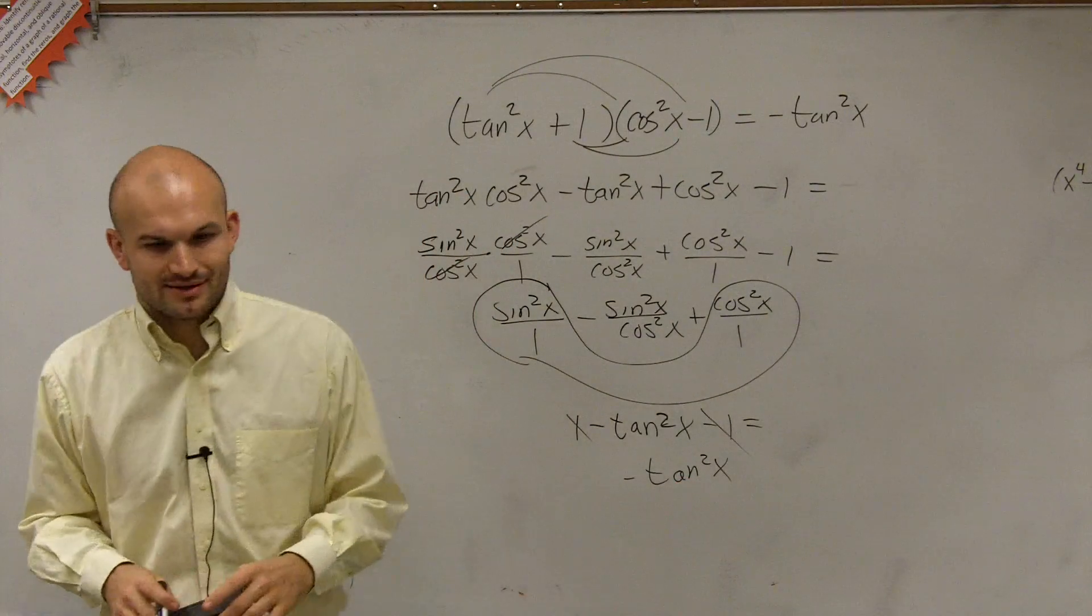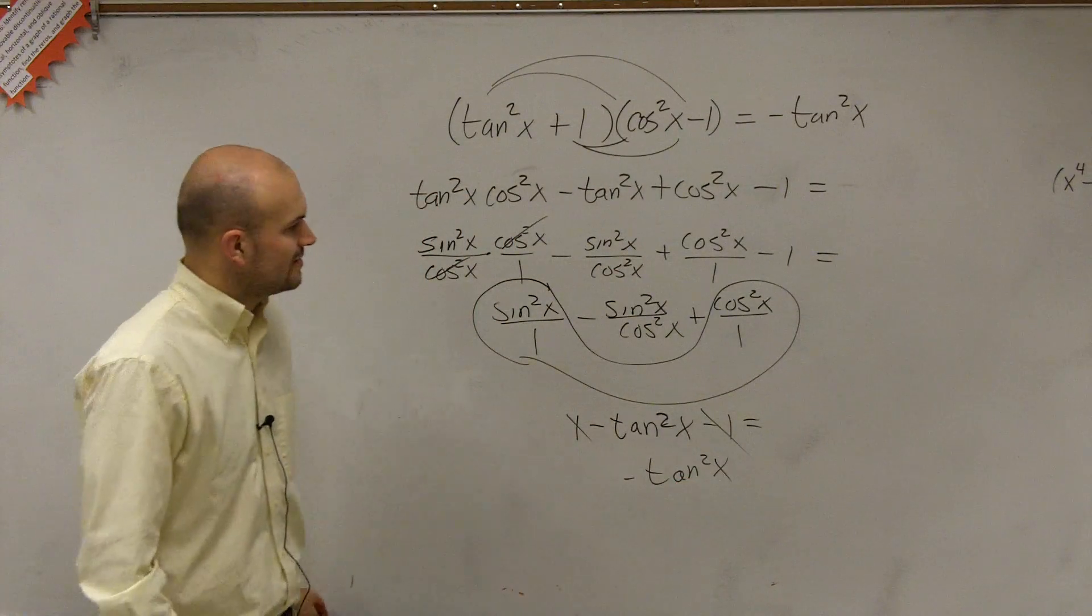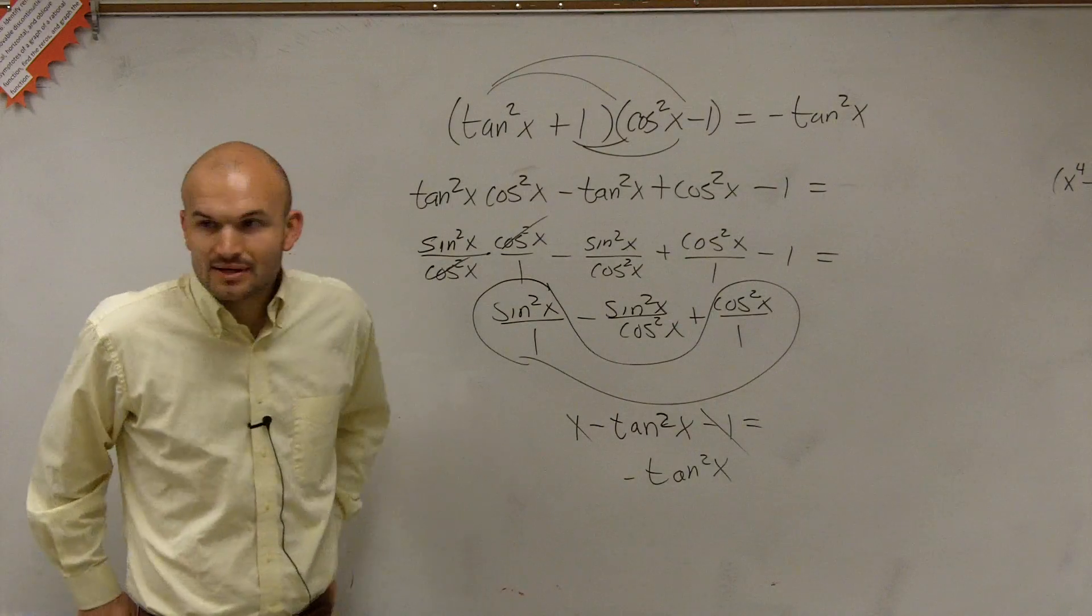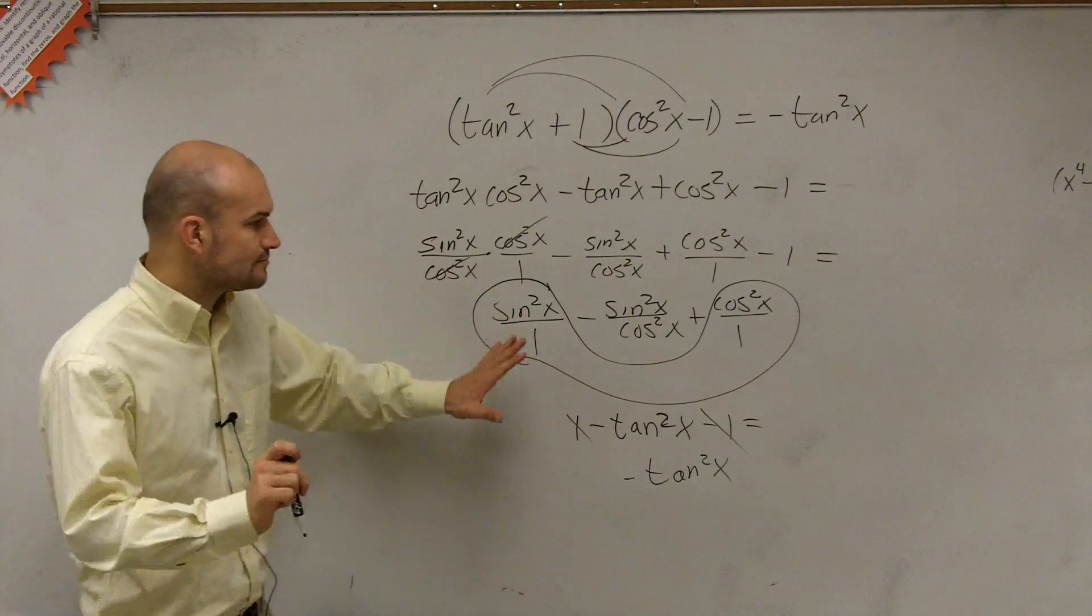And I'm just left with negative tangent squared of x. You're right, you don't need to add them up. I had those sine and cosine squareds right there. I just couldn't see them as I wrote them there.